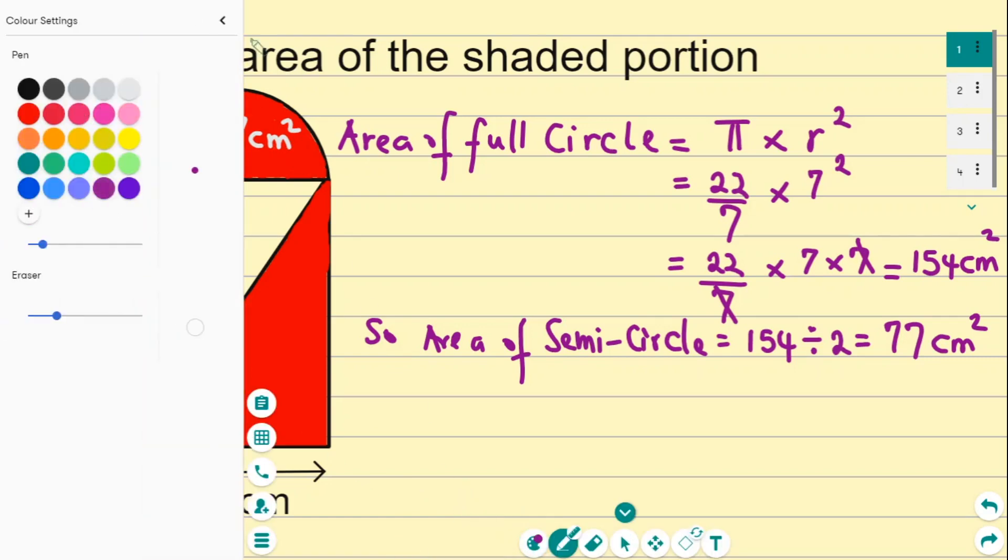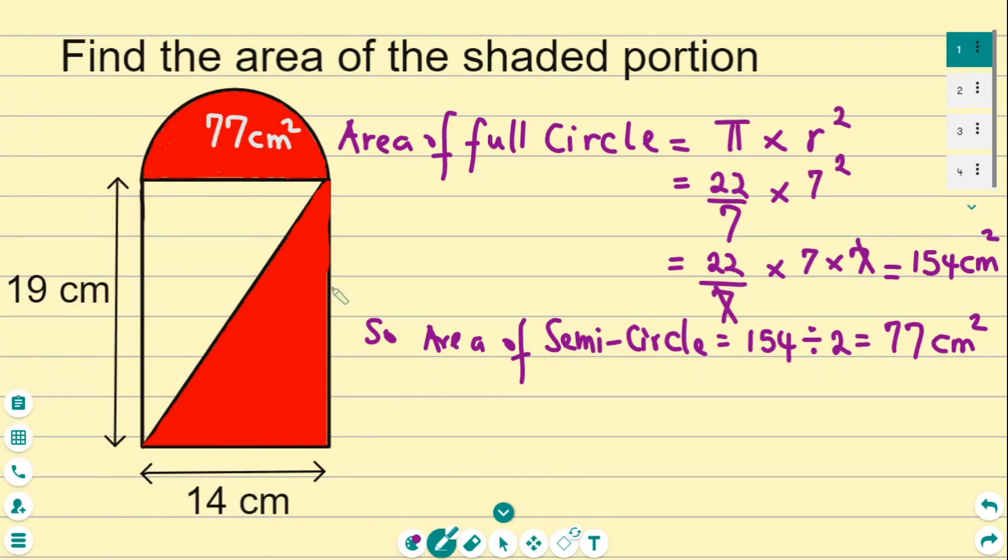We've got to find the area of this shaded right-angled triangle. The area of a triangle can be calculated with the formula: base times height, divided by 2.